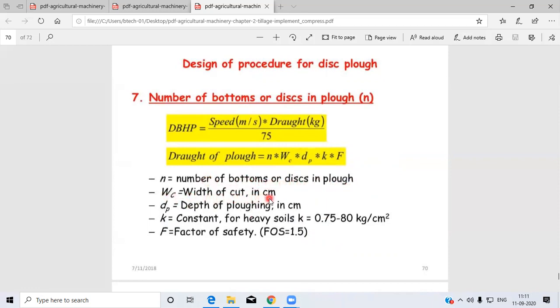Wc is the width of cut in centimeters, dp is the depth of plowing in centimeters, K is a constant for heavy soil (0.758 kg/cm²), and the factor of safety f is taken as 1.5.